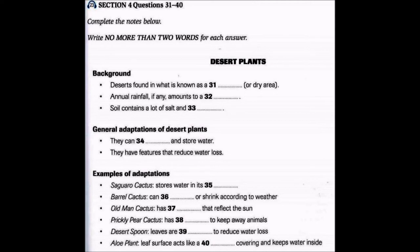Desert plants often look very different from any other plants. This first one is the saguaro cactus, which grows in North America. It looks a bit like an open hand with long fingers. This plant has a large network of roots that extend far away from its trunk, and these roots collect water after rain. The water is then taken to the green stem, where it's kept and keeps the whole plant alive until the next rain comes.